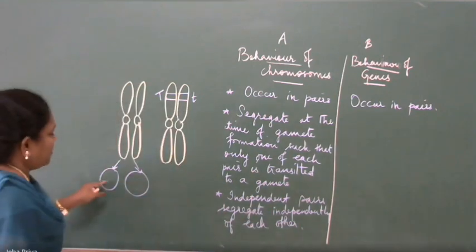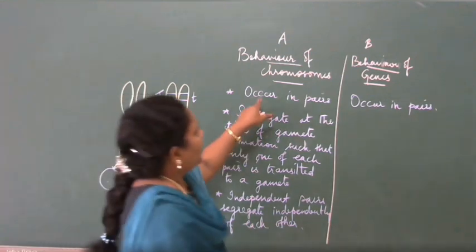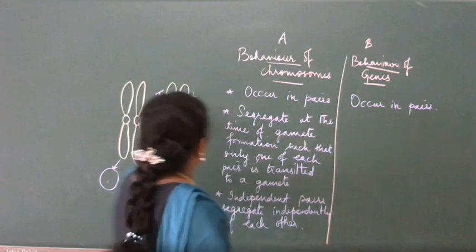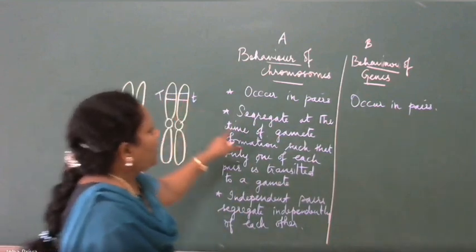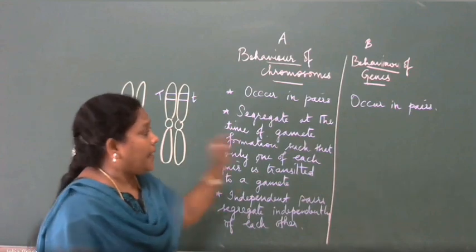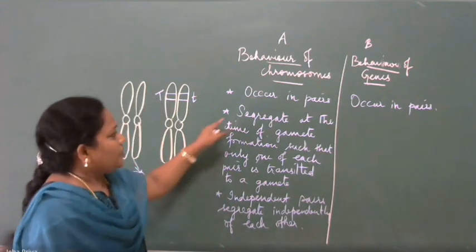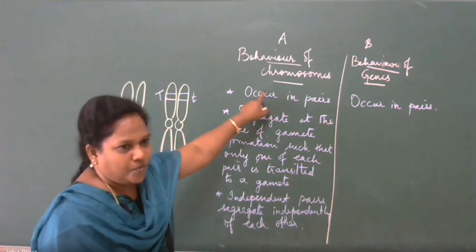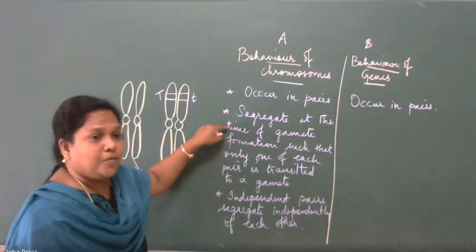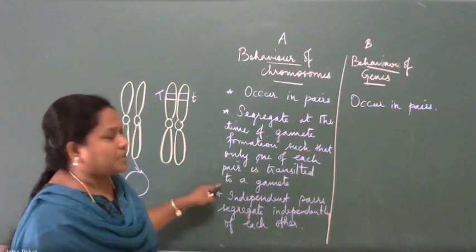One chromosome comes to this gamete, another chromosome comes to this gamete — they are not dependent on each other. We have learned that chromosomes occur in pairs and genes also occur in pairs. Similarly, genes segregate at the time of gamete formation only, and only one of each pair is transmitted to a gamete.